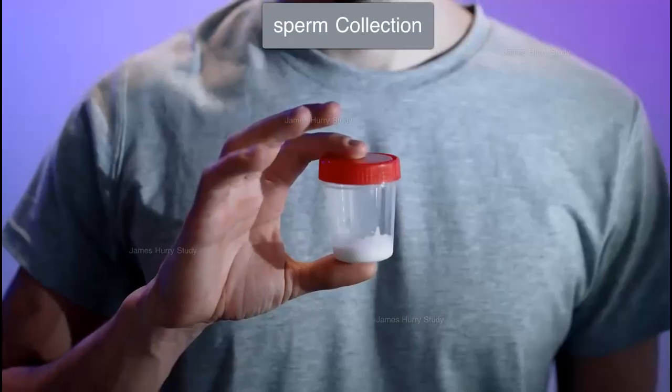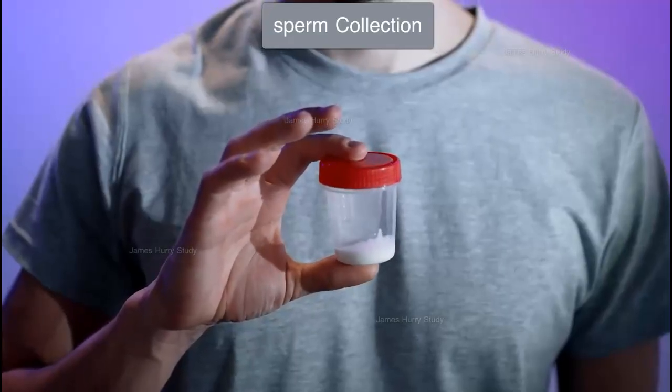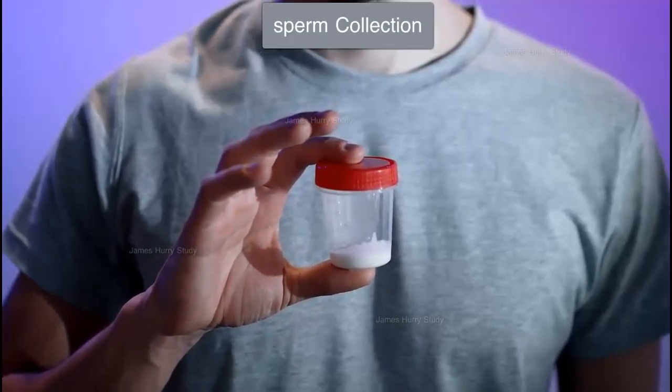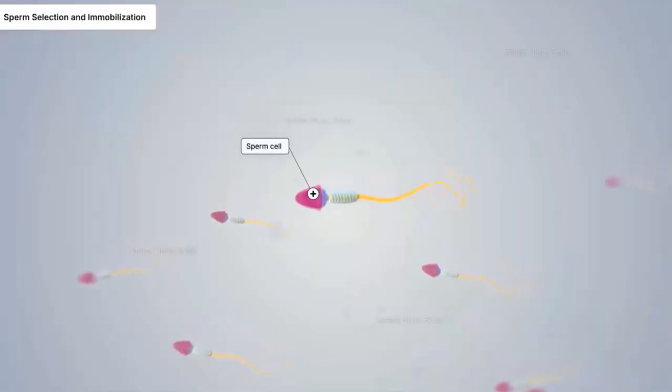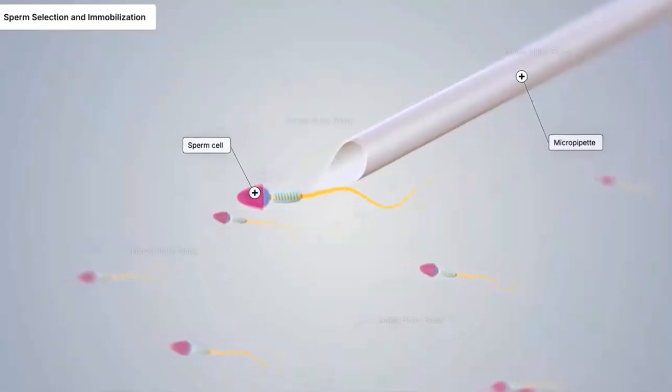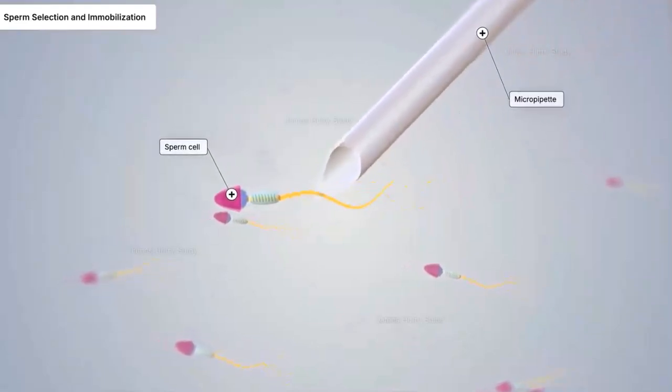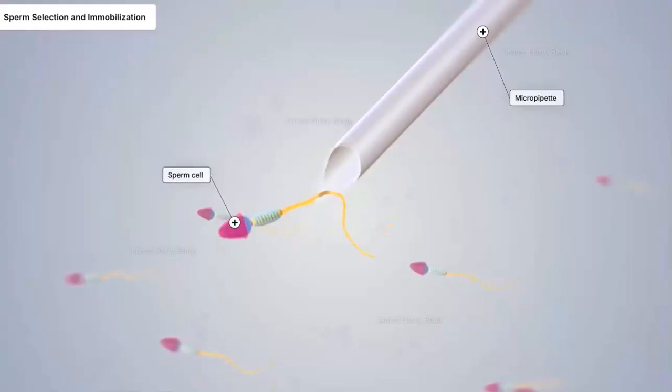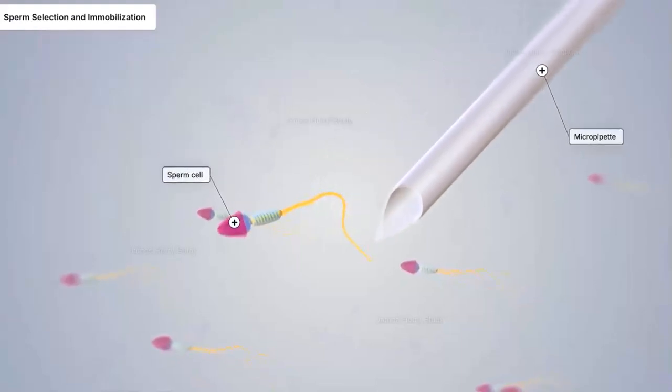In the third step, the man collects his sperm at the lab, and then the intracytoplasmic sperm injection method starts. In the laboratory, embryologists use a powerful microscope to carefully identify and select a single healthy sperm cell. Once selected, the sperm cell is sucked into a fine glass needle.